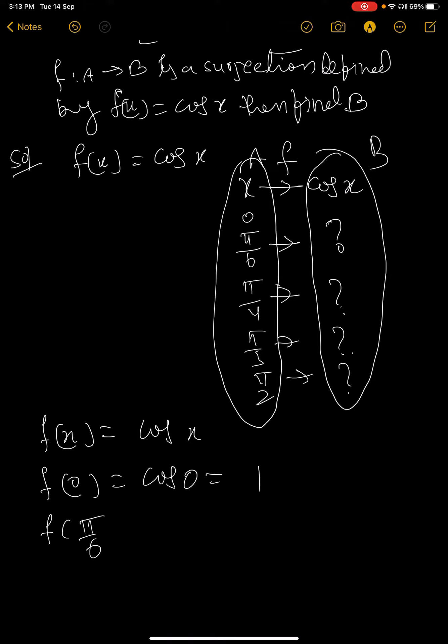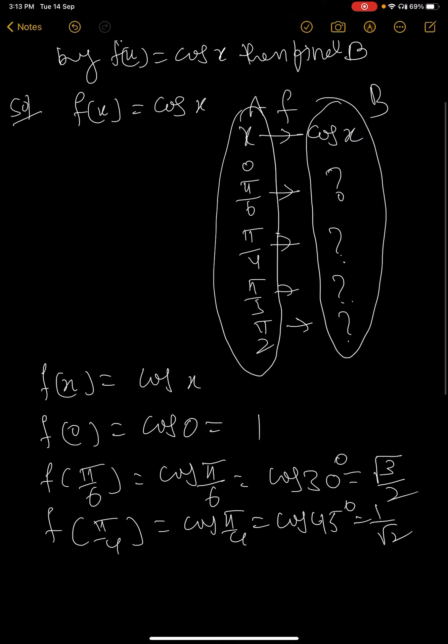Similarly, when x is equal to π/6, cos π/6 is cos 30° which equals √3/2. f(π/4) = cos π/4 = cos 45° = 1/√2. f(π/3) = cos 60° = 1/2.